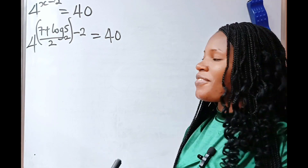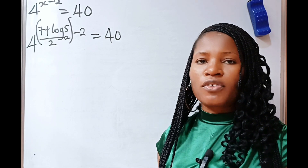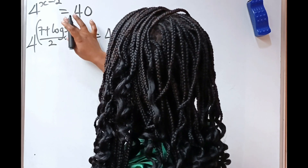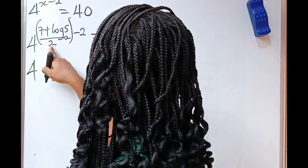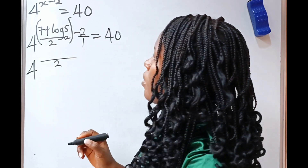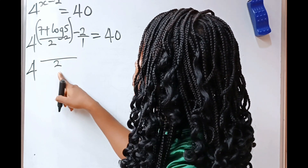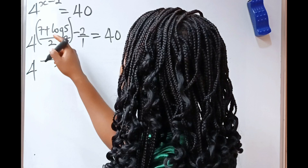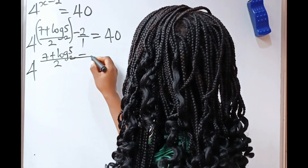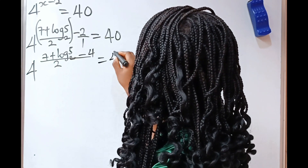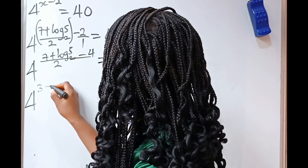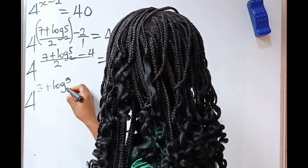Are you enjoying this video? If yes, please give us a thumbs up and tell us what you feel in the comment section. Now, if we are to solve this, we have 4 to the power of — the LCM of 2 is 2. When 2 divides itself that's 1, and 1 times the whole expression gives us 7 plus log 5 base 2. Then minus 2 divided by 2: 2 times 2 is 4. So, 7 minus 4 gives us 3 plus log 5 base 2, all divided by 2, is equal to 40.